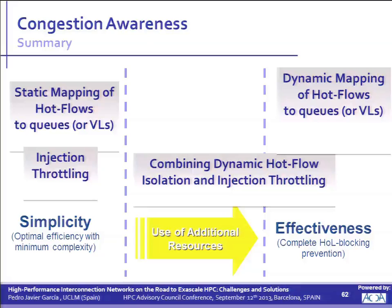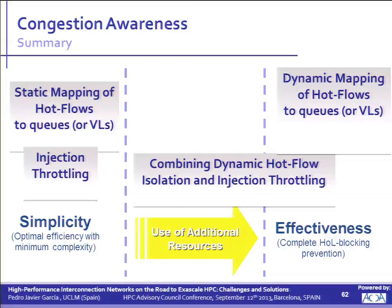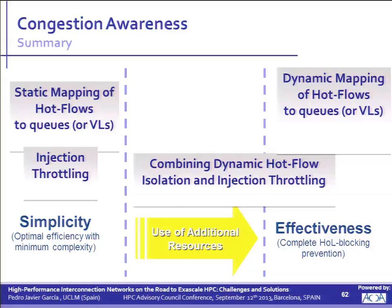Summing up the situation of congestion management for Exascale: we think we should still explore simple mechanisms such as injection throttling — probably improving scalability. It is also very interesting to explore static mapping of packets to queues, always tailored to the topology and routing algorithm. If we need more effectiveness in congestion management, we can use dynamic mapping of hot flows — this expensive mechanism — if we can afford it, or combine injection throttling with dynamic mapping, or explore not-yet-discovered combinations of approaches.